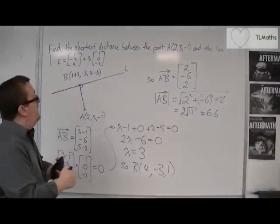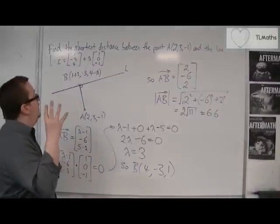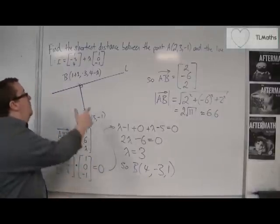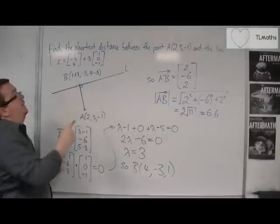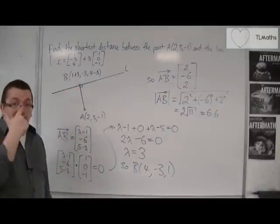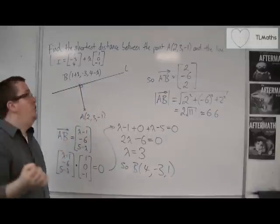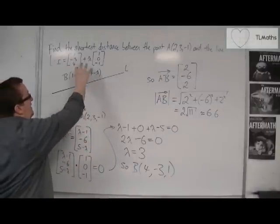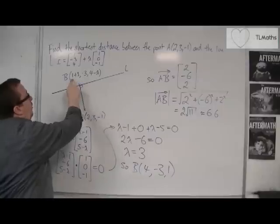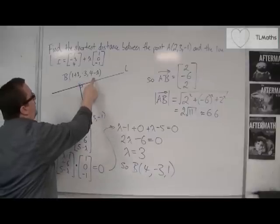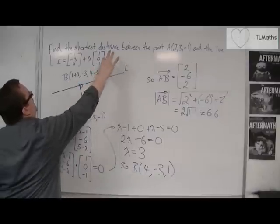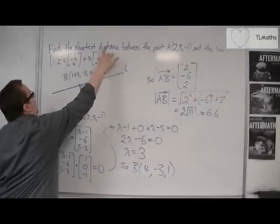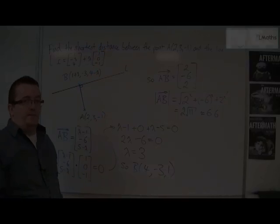So that is how you find the shortest distance between a point and a line. It really hinges on identifying that the closest point B will have coordinates given by the top, middle, bottom of the equation of the line. Good luck.